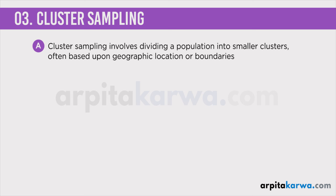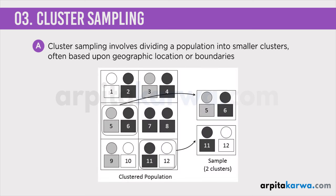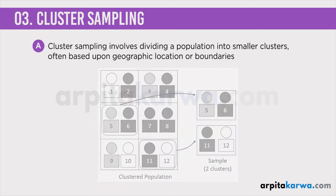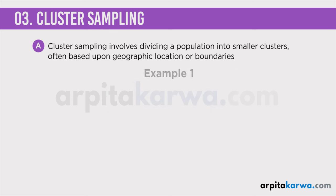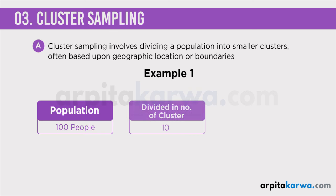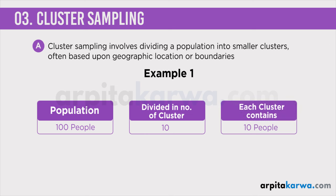Suppose you have divided a particular population into 20 clusters. You select any three clusters randomly and all the subjects within those clusters are measured. If you have divided a population of 100 people into 10 clusters, every cluster has about 10 people. You choose 3 clusters, and all the people in those 3 clusters — a total of 30 people — will be your sample.